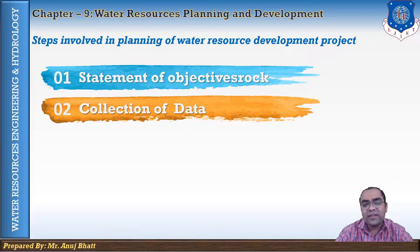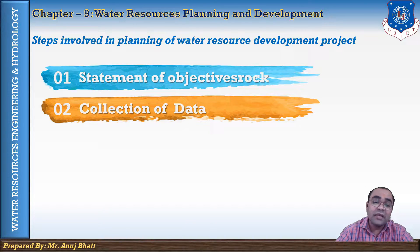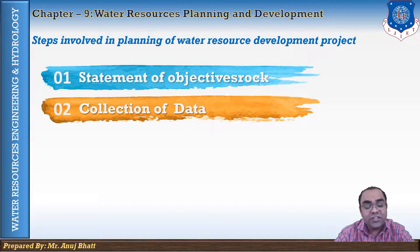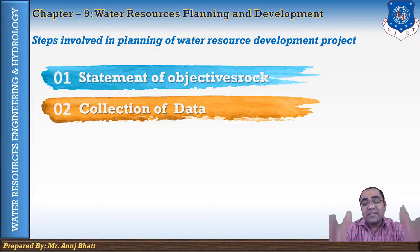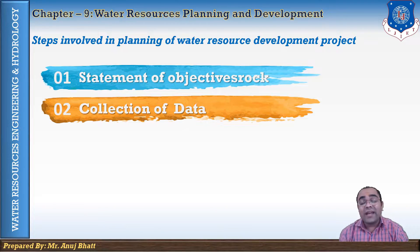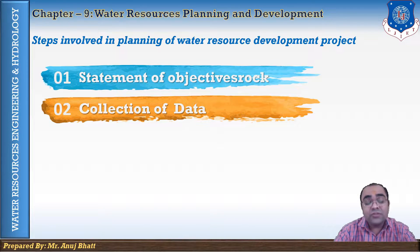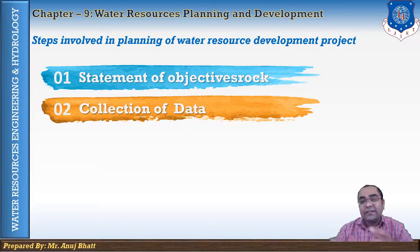Economic data also includes transportation, communications, marketing, recreational tourism data, the effect on tourism, taxes, and land. Then some legal data such as water rights and population control, land ownership. Public opinion data and data on existing projects — these are the list of general data that we need to collect in the second step of the plan.